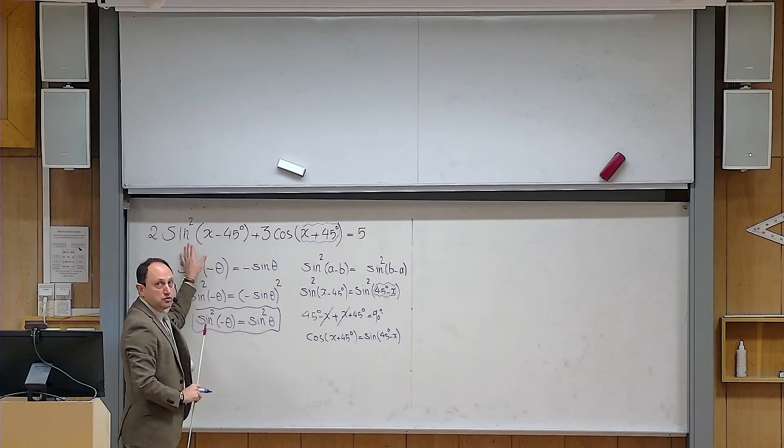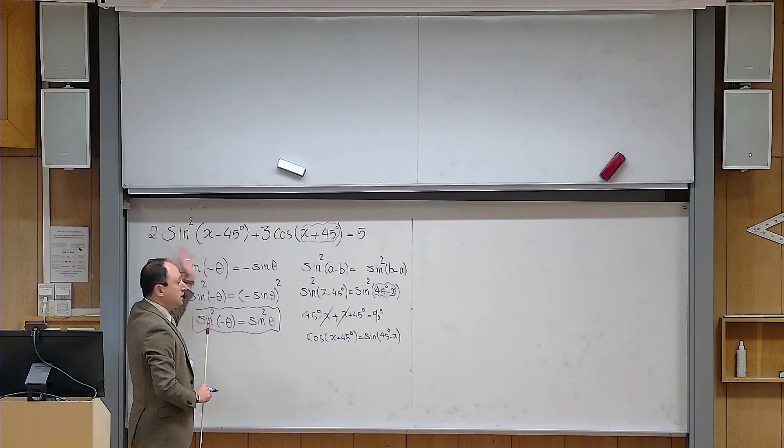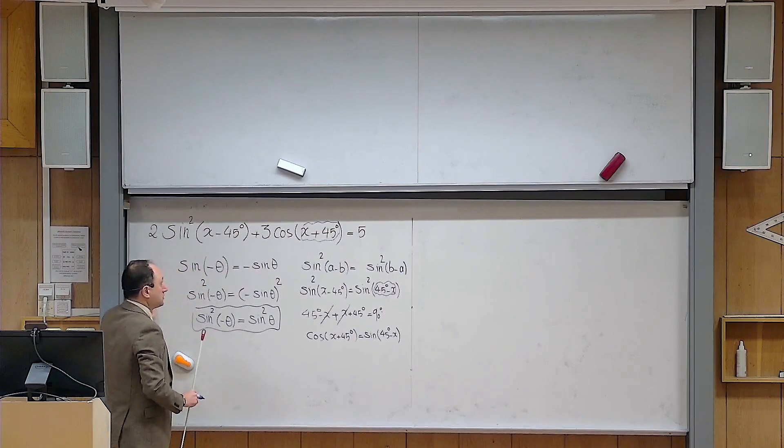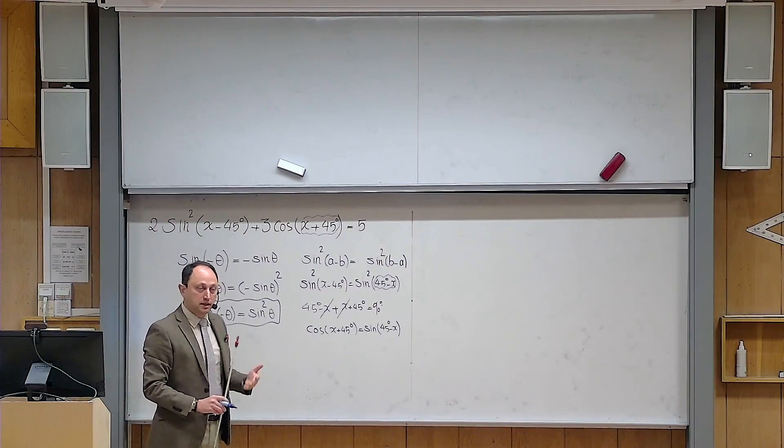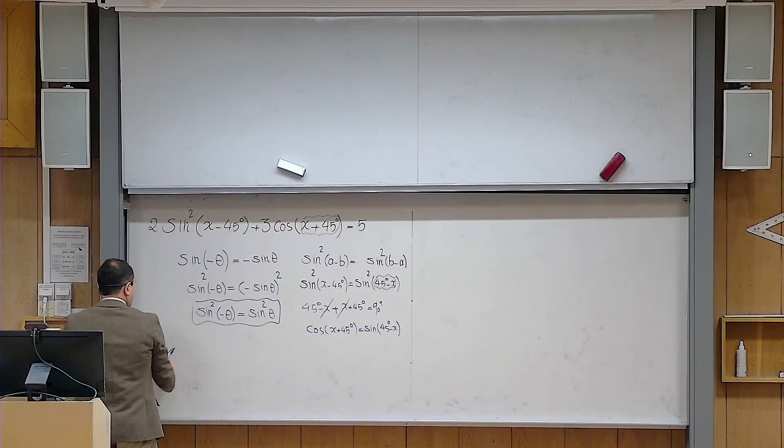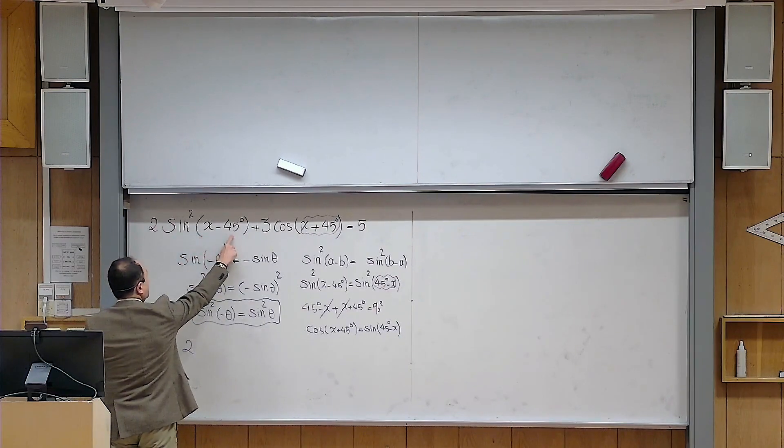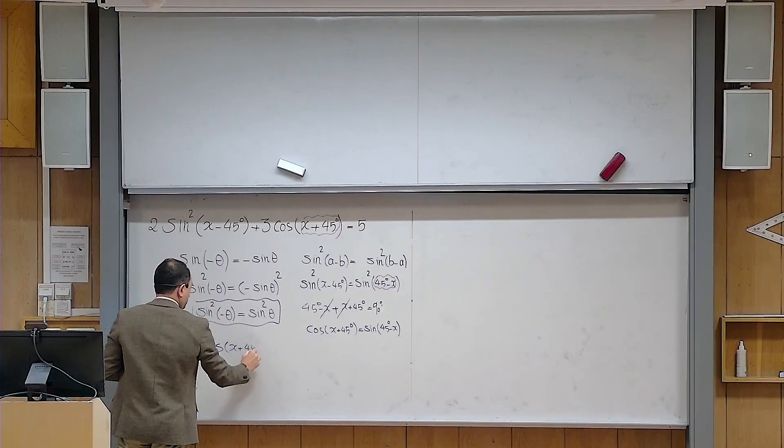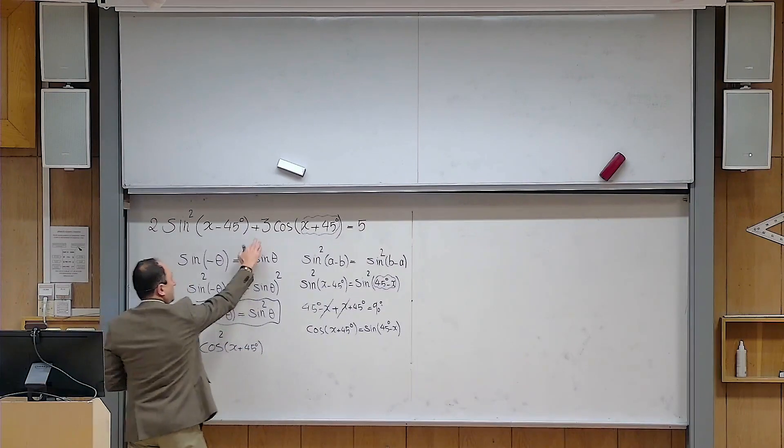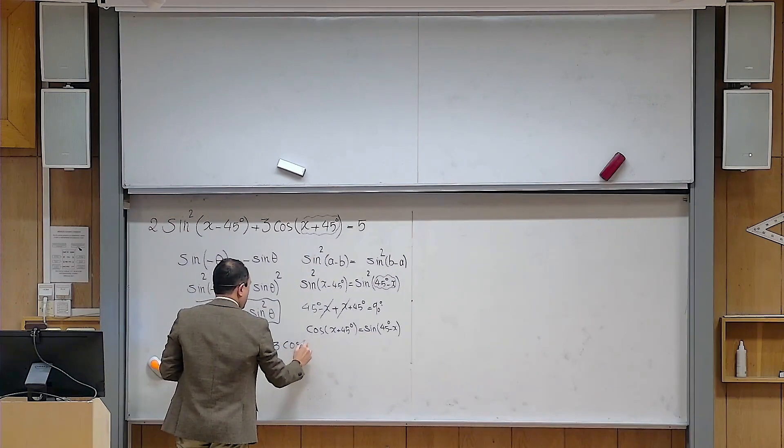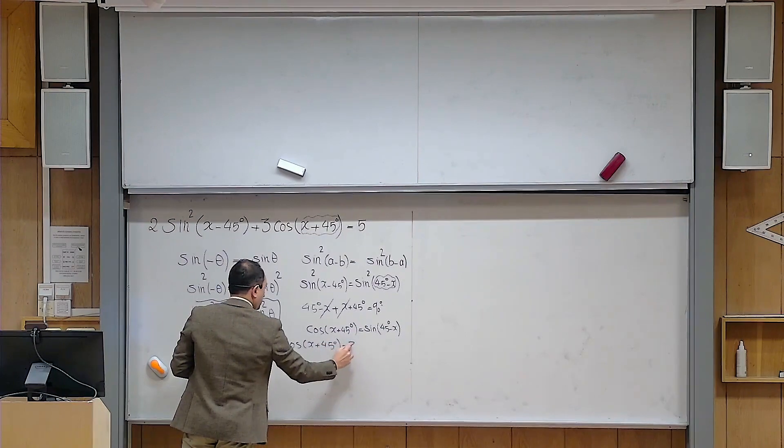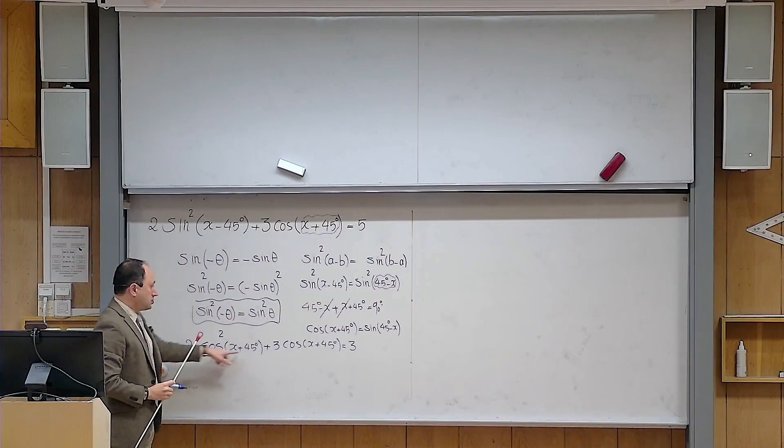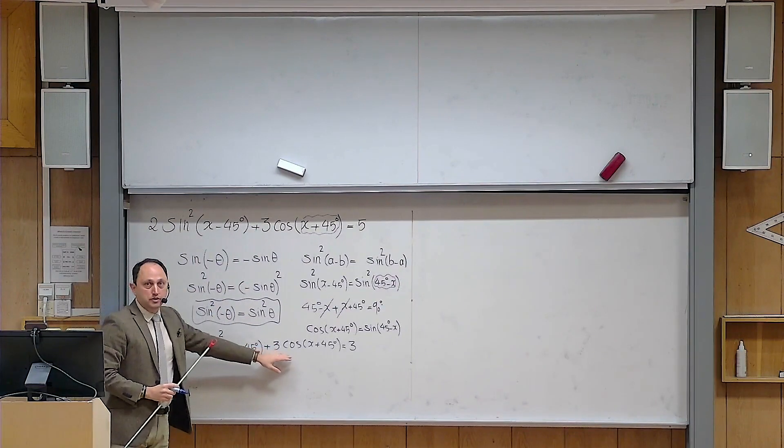Now what happens? Instead of having a mixture of sine and cosine in my equation, I can write the equation in terms of sine only or cosine only. I prefer to write everything in terms of cosine in this problem. Of course, it doesn't matter at all. The answer you will get at the end will be the same. So what I do, I will write 2, but instead of sine of x minus 45 squared, I can write cosine of x plus 45 squared. And then I copy and paste this part plus 3 times cosine x plus 45 degrees equals 5. So instead of solving the original problem, which is a mixture of sine and cosine, I can simply solve this equation, which is easier because it is only expressed in terms of cosine.